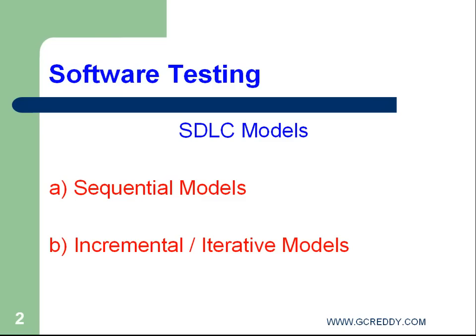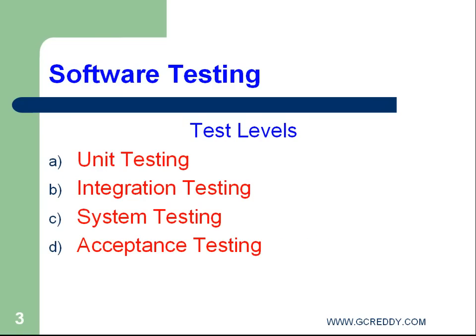Our direct subject is test levels. In software development and testing, we have four levels of testing. Testers may vary from one level to another. The first level is unit testing, also called component testing, program testing, or module testing — all these are synonyms.